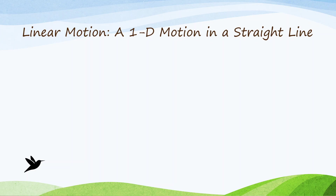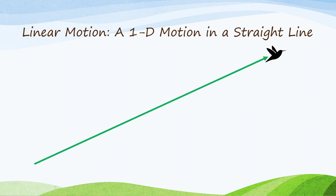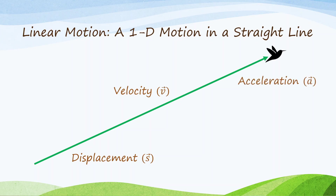Linear motion is a one-dimensional motion in a straight line. Here, there is a bird soaring across the sky. It has a displacement, it has velocity, and its speed increases from slow to fast. So, it also has an acceleration. Displacement, velocity, and acceleration — these three terms are the terms in linear motion.